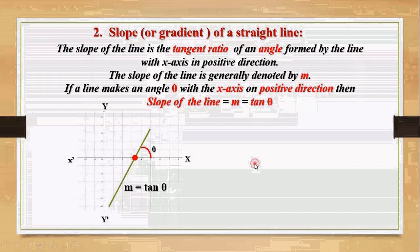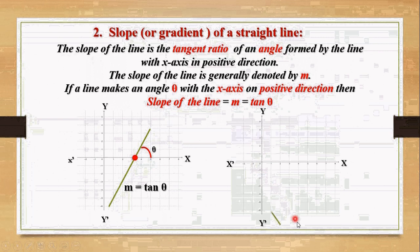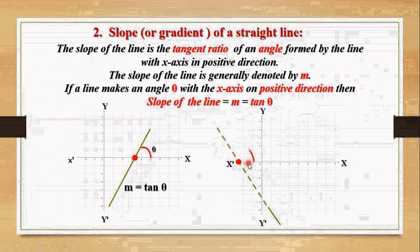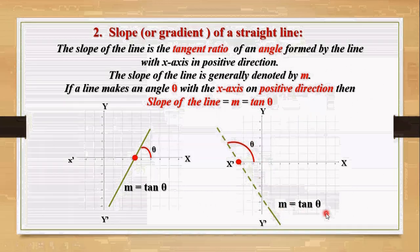Let's take one more figure. The straight line is here but it is not intersecting with the x-axis, so we produce it. We take the intersection of the produced line and the x-axis, then measure the angle in the positive direction of the x-axis. The angle is theta. The tangent ratio of this angle theta is the slope, hence slope m equals tan theta.